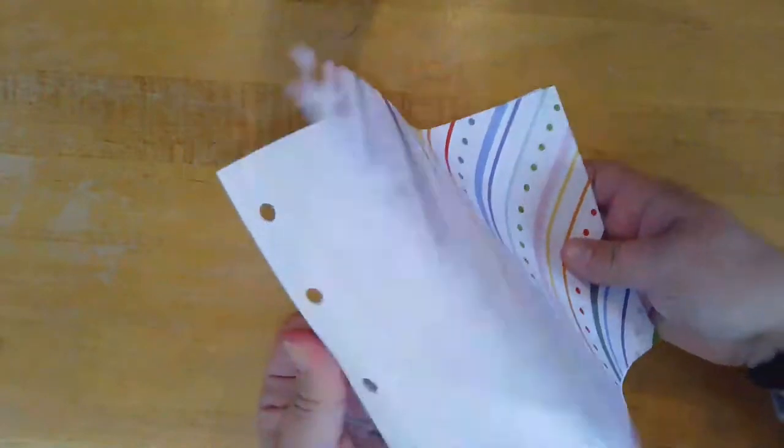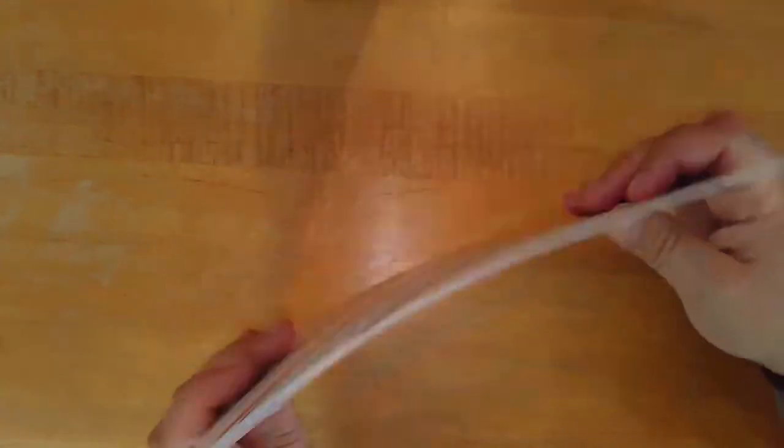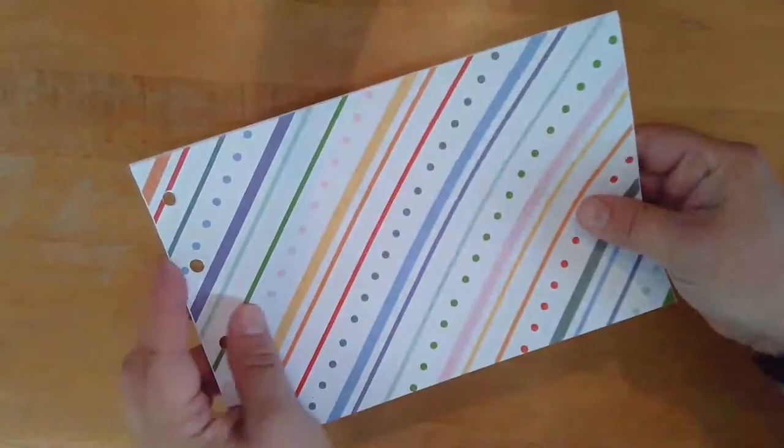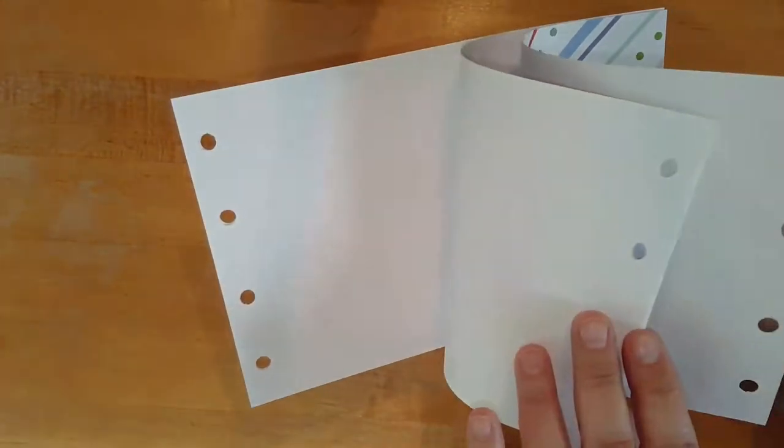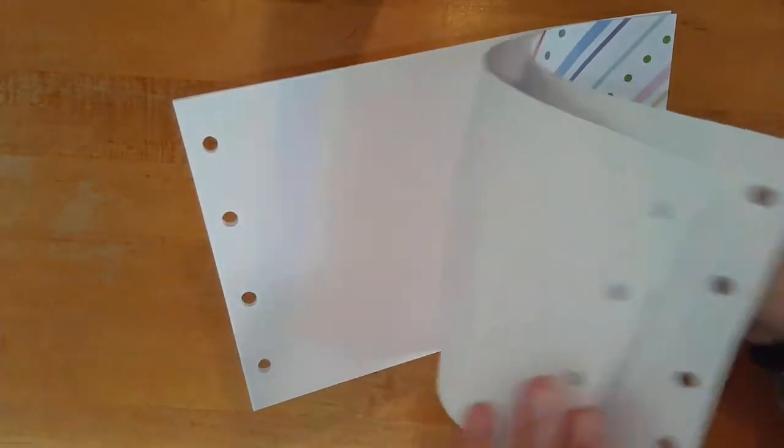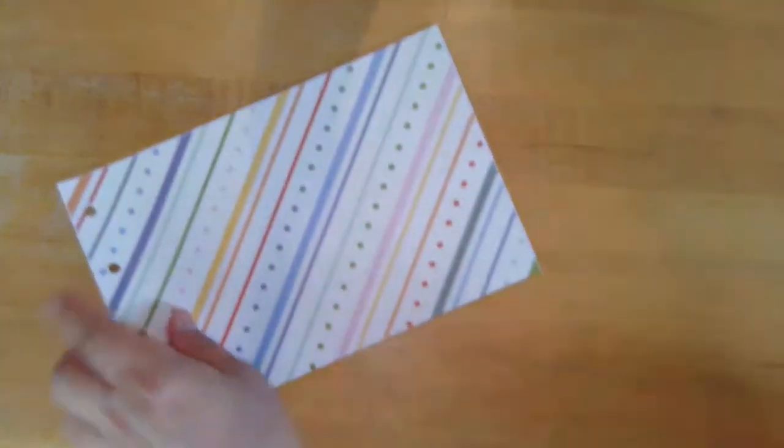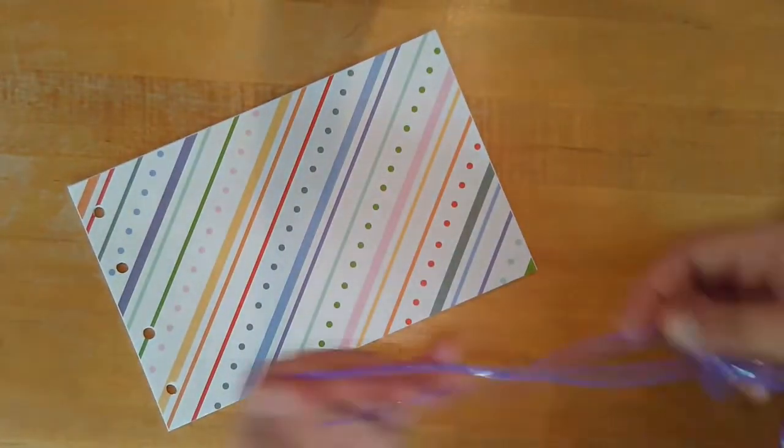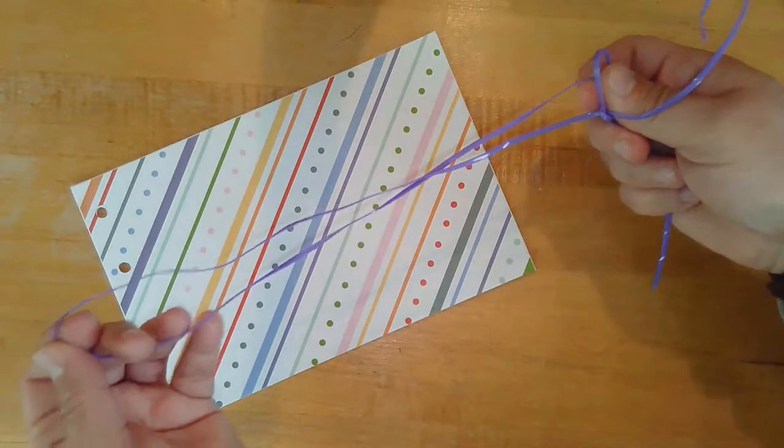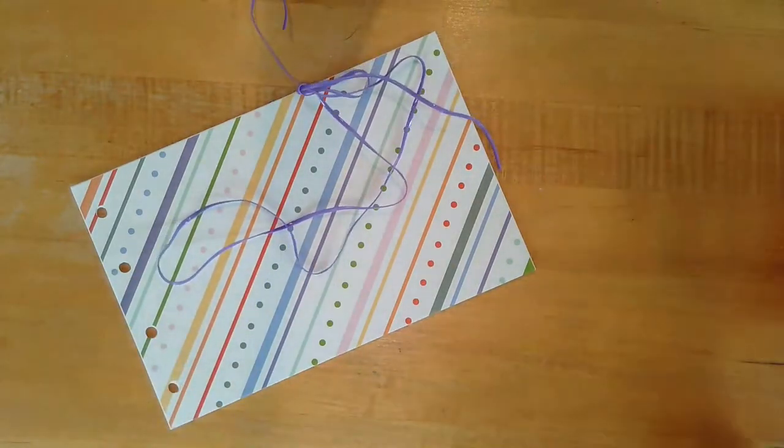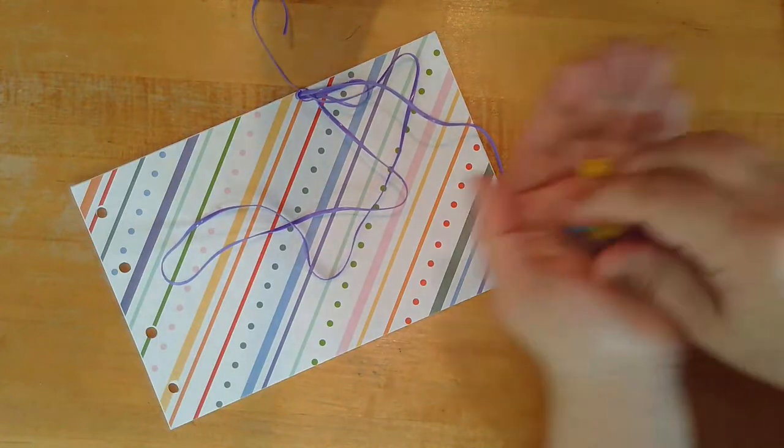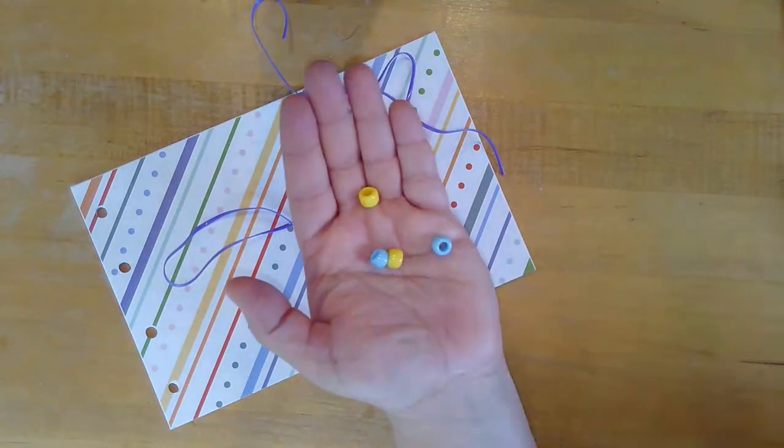In your kit you'll have received some colorful paper and some plain notebook paper that has been pre-cut and hole punched. You'll also receive about 36 inches of jelly string. It should go with your colorful paper covers and about four beads.